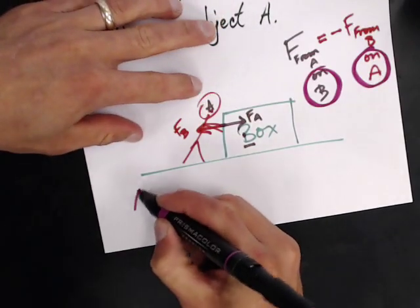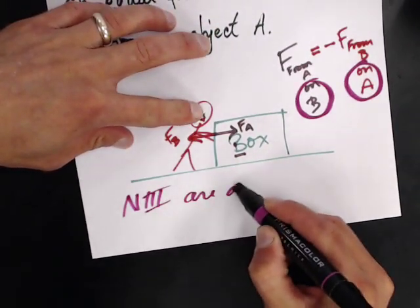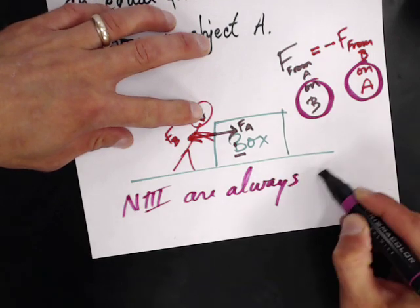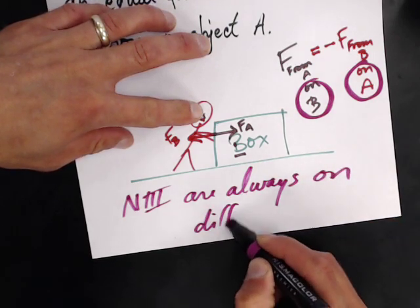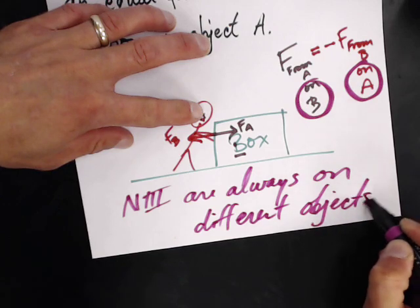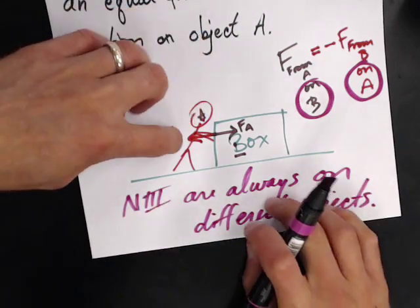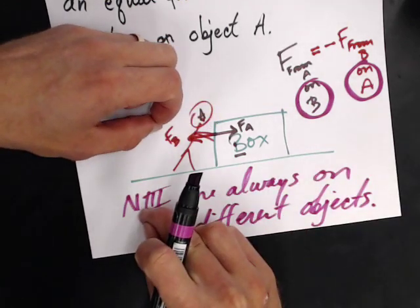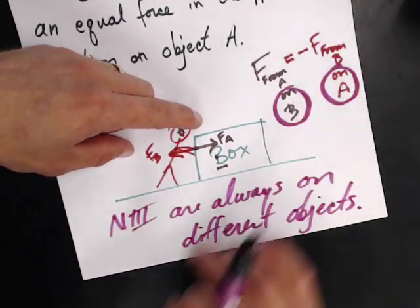So Newton's third law pairs are always on different objects. So the moment you're on the same object, then it's not a Newton's third law set. It doesn't follow this rule.